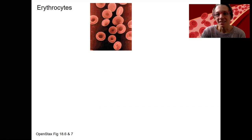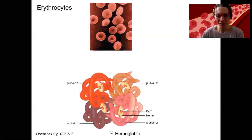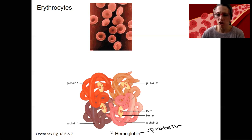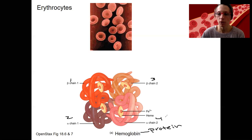The important component in erythrocytes — what they're packed full of and gives them their red color — is hemoglobin. Hemoglobin is a protein with a quaternary structure, which means it's made up of four subunits. Those are the beta and alpha chains — there are four of them altogether that come together to form the full hemoglobin protein.